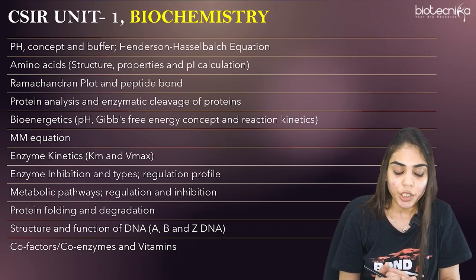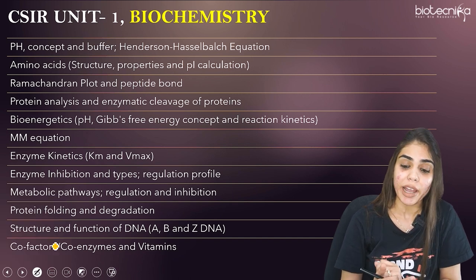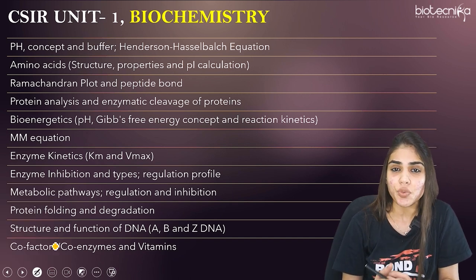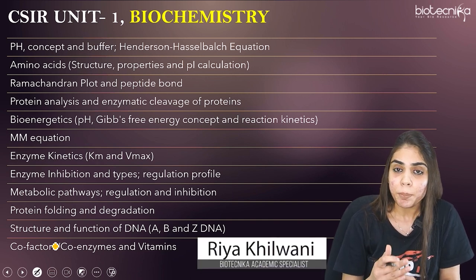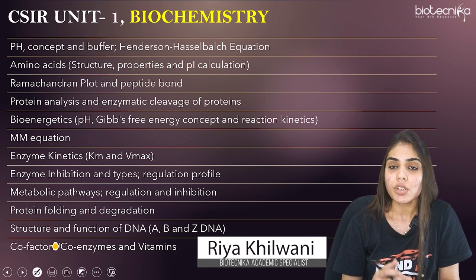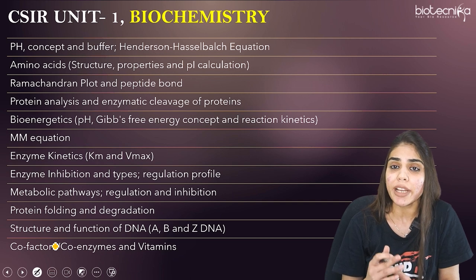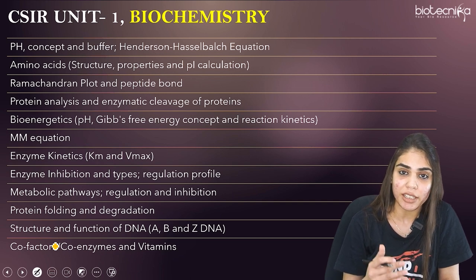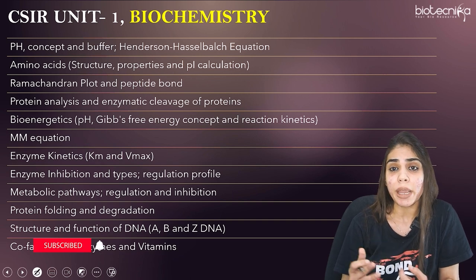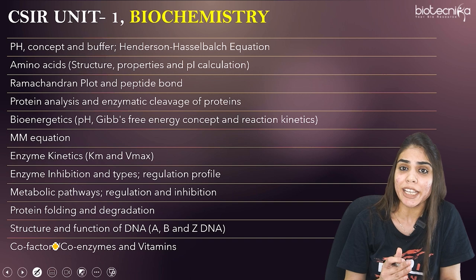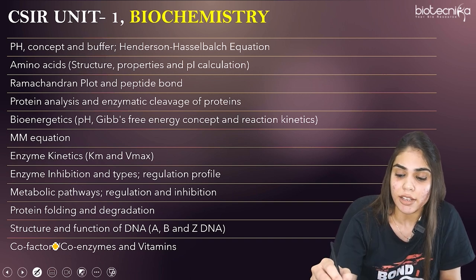Coming to CSIR Unit 1, that is Biochemistry. If you analyze the biochemistry syllabus you will find the most important topics from where questions are asked each and every year. The first topic is pH concept and buffer. You should know about pH, its concept as well as buffers. You should know about the Henderson-Hasselbalch equation: pH equals pKa plus log of salt upon acid. From this, many questions are asked where you have to relate pH and pKa value.